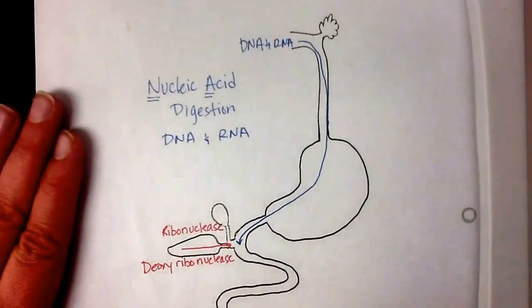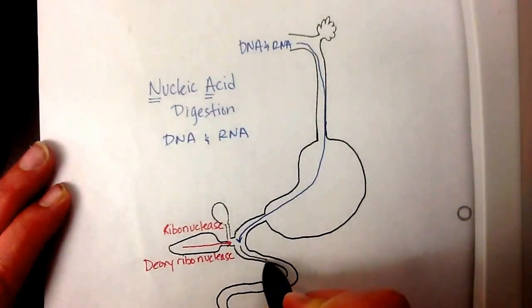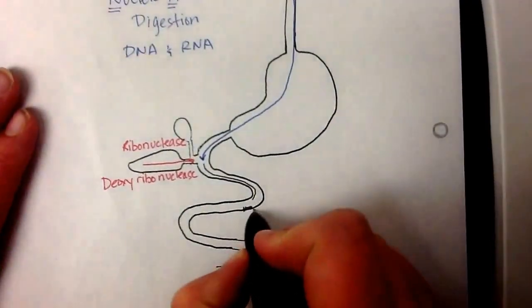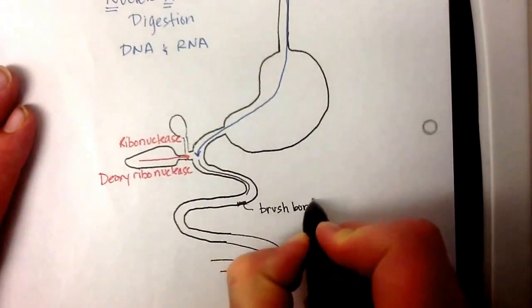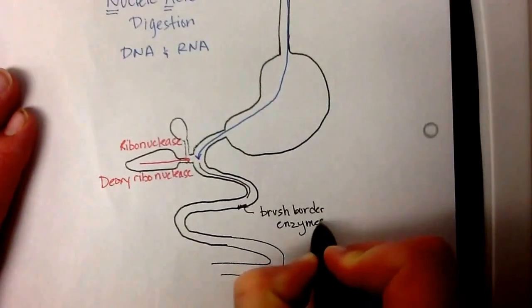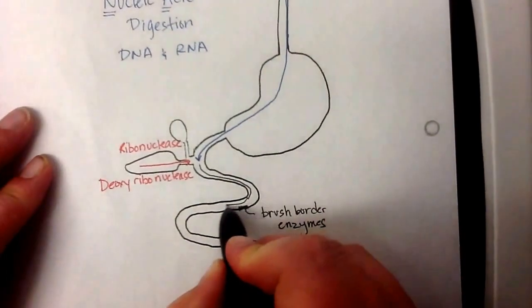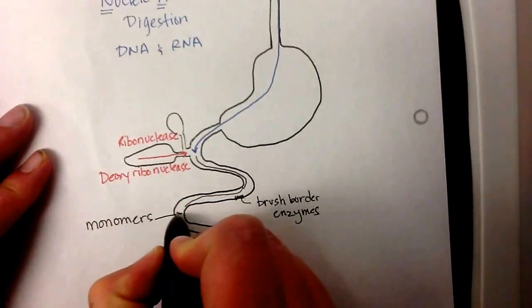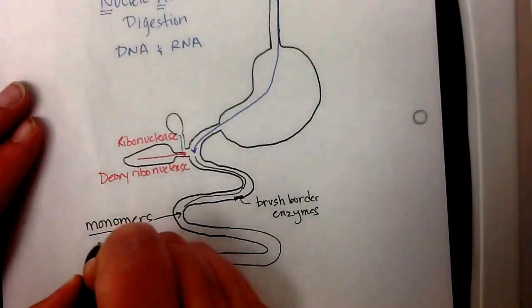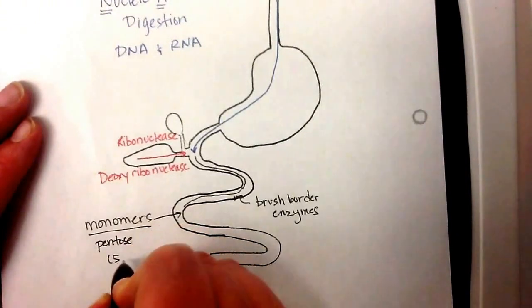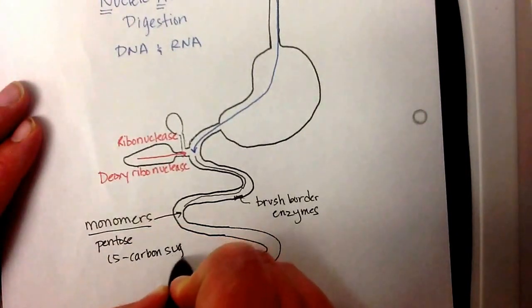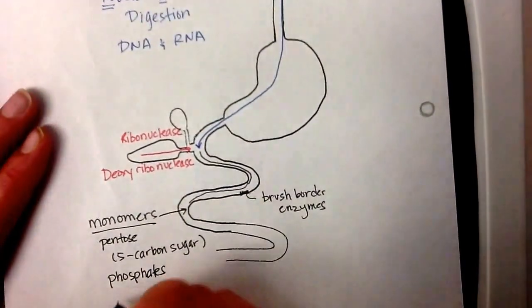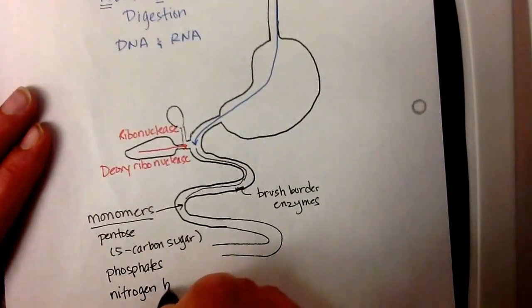And so now we have the start of that breaking down, and then in the brush border, we have brush border enzymes, and I am not going to be specific about these at all, that continue the breakdown process and the monomers that we're going to end up with. These monomers that we're going to end up with here are going to include pentose, which is a five-carbon sugar, phosphates, and nitrogen bases.